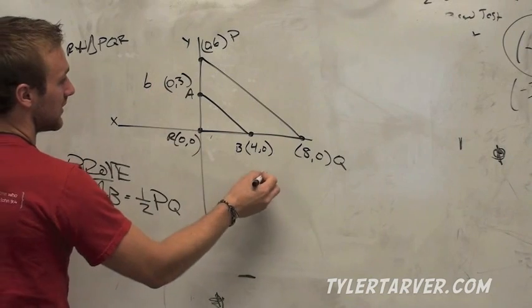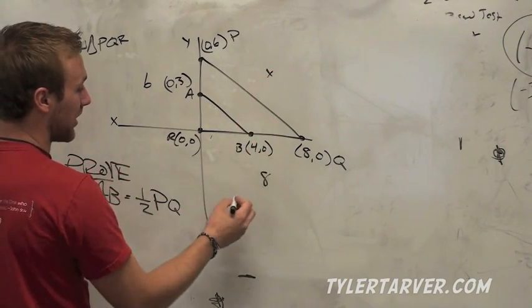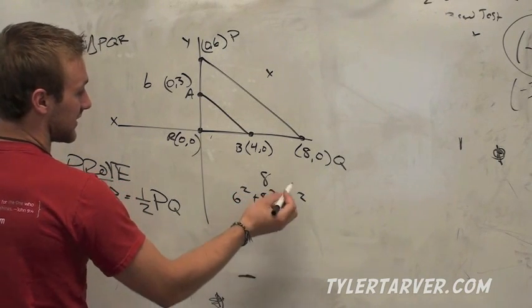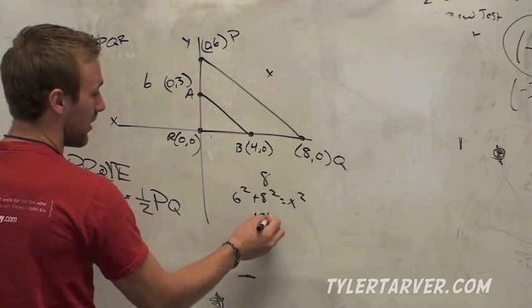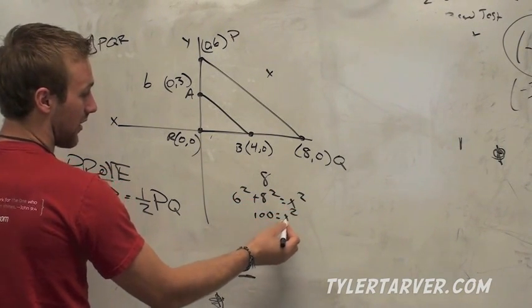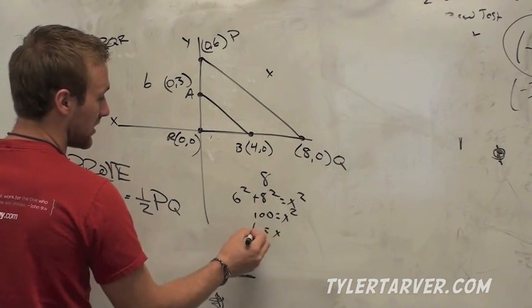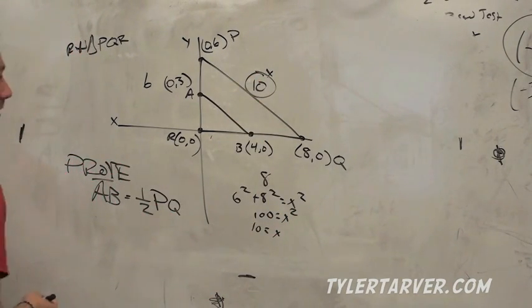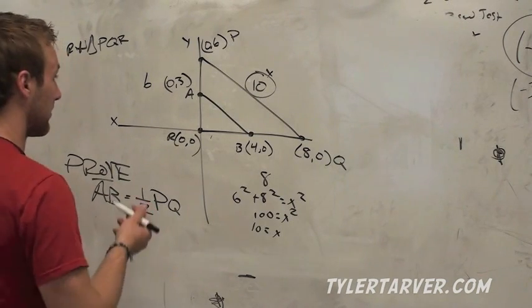So let's do the Pythagorean theorem. This is six. This is eight. That's x. I could plug it in. 6 squared plus 8 squared equals x squared. That's 36. That's 64. Add it together, it's 100. Last step to get rid of the squared, I square root. x equals 10. That was easy because I'm math teacher and I skipped a lot of steps in my head.